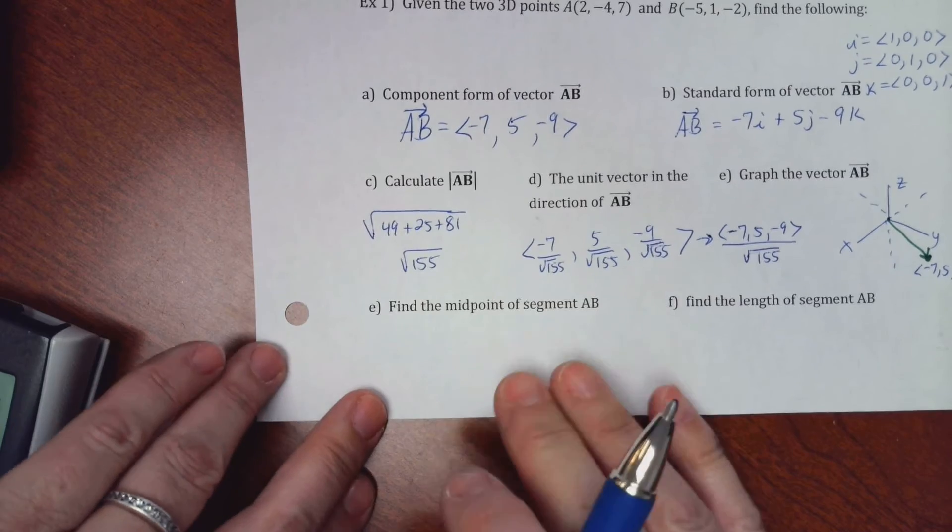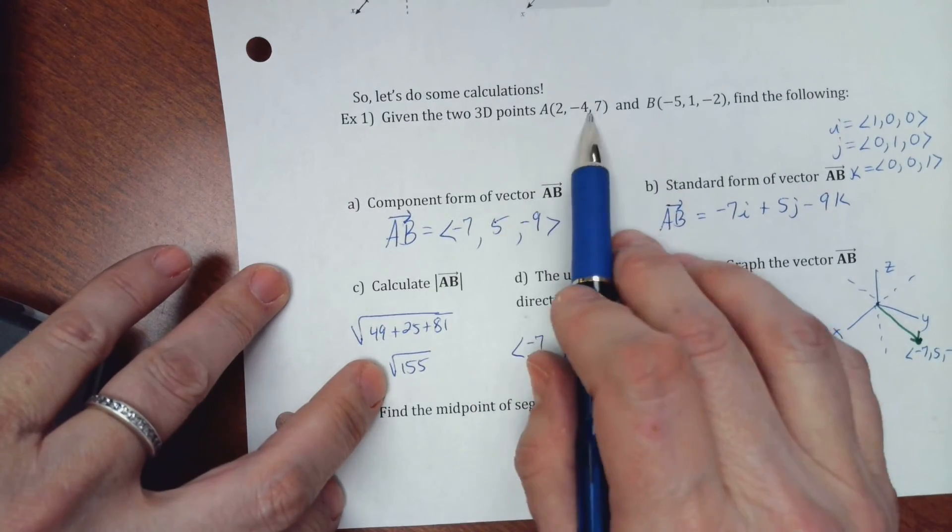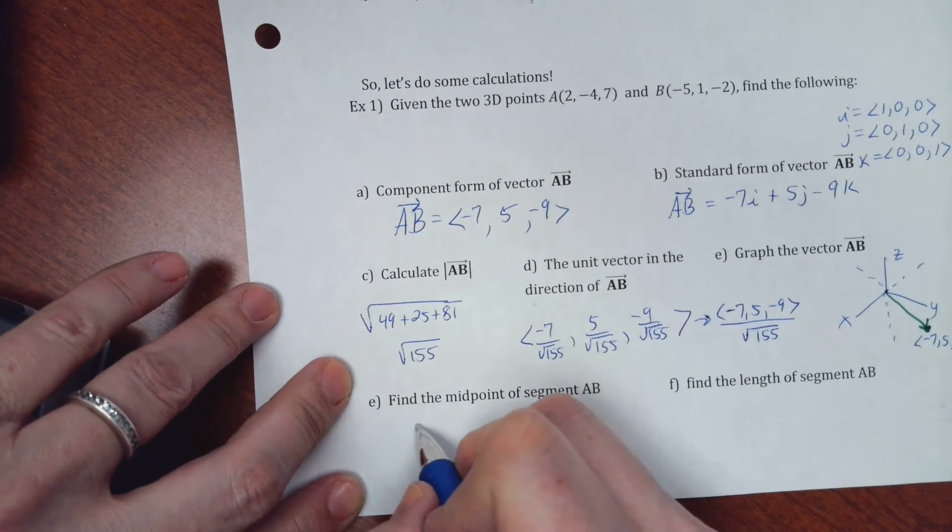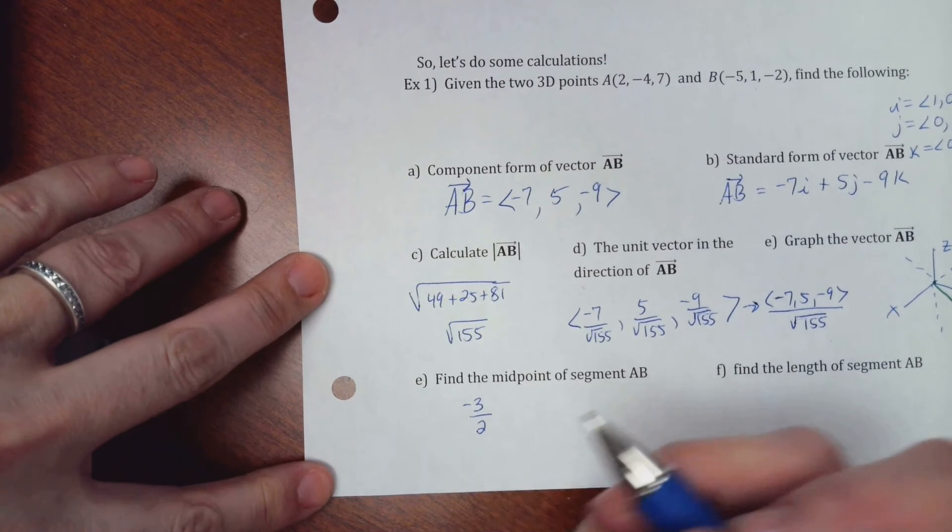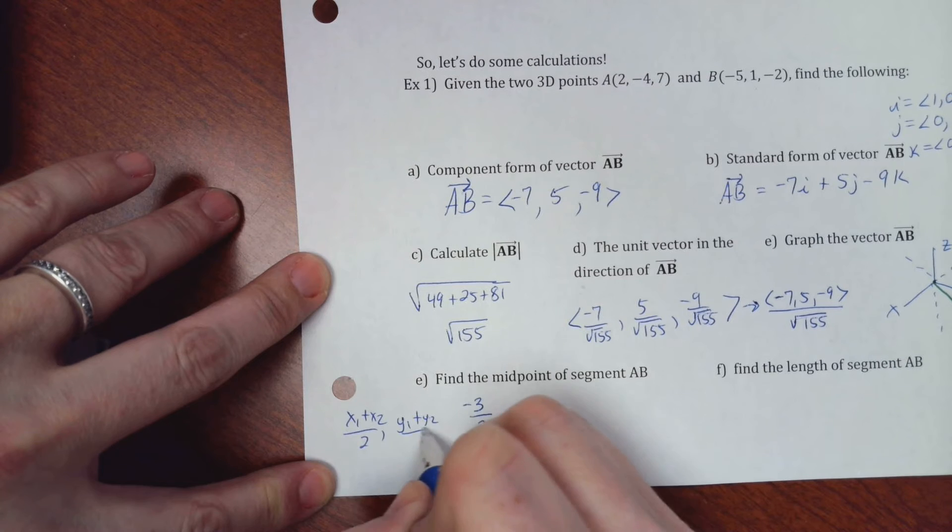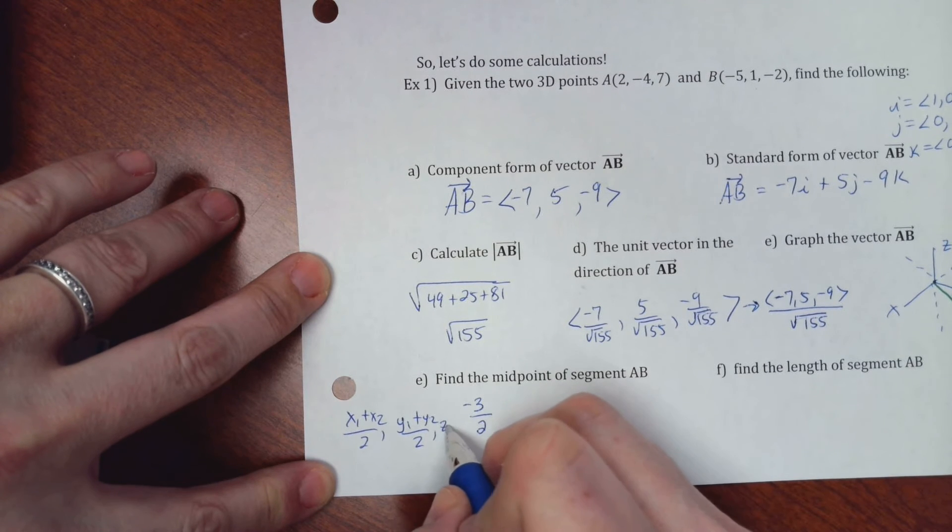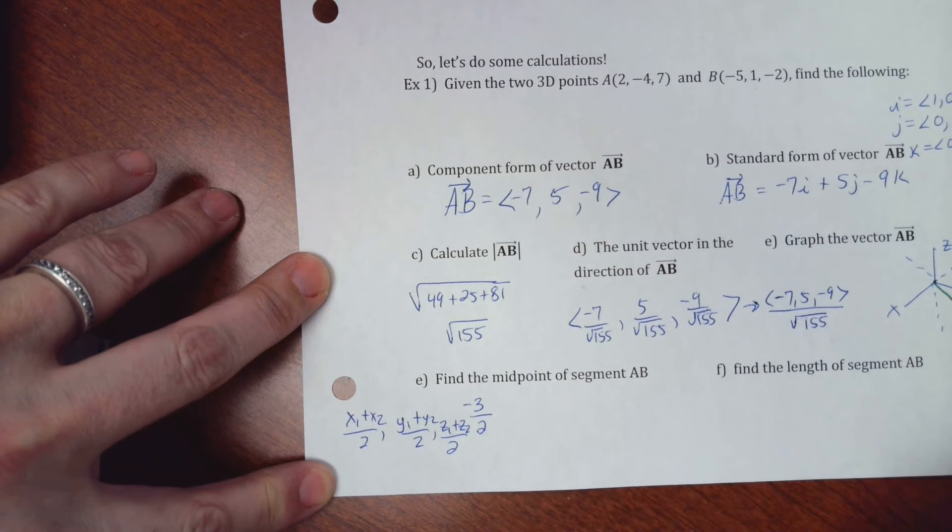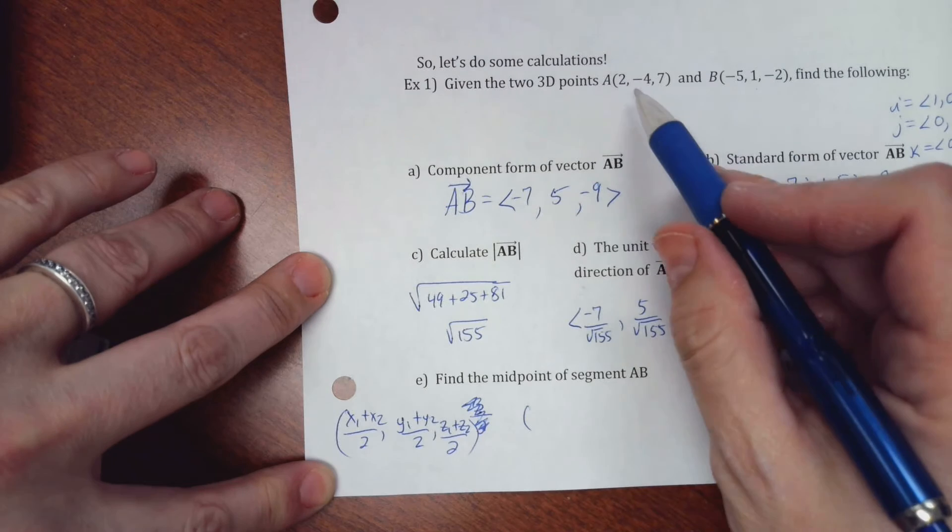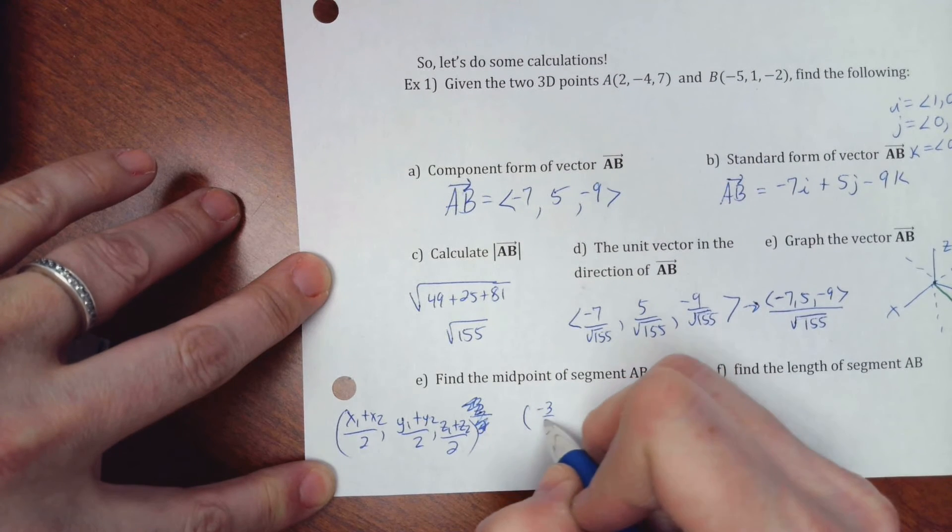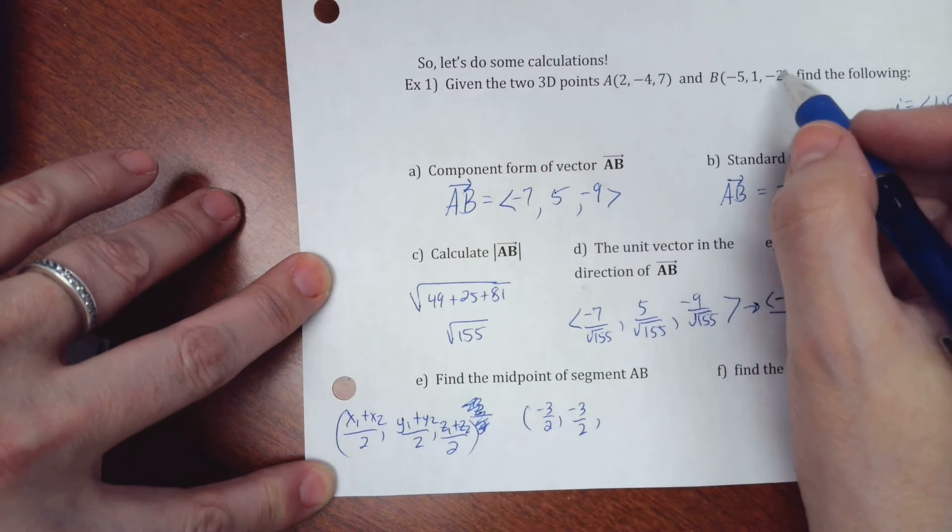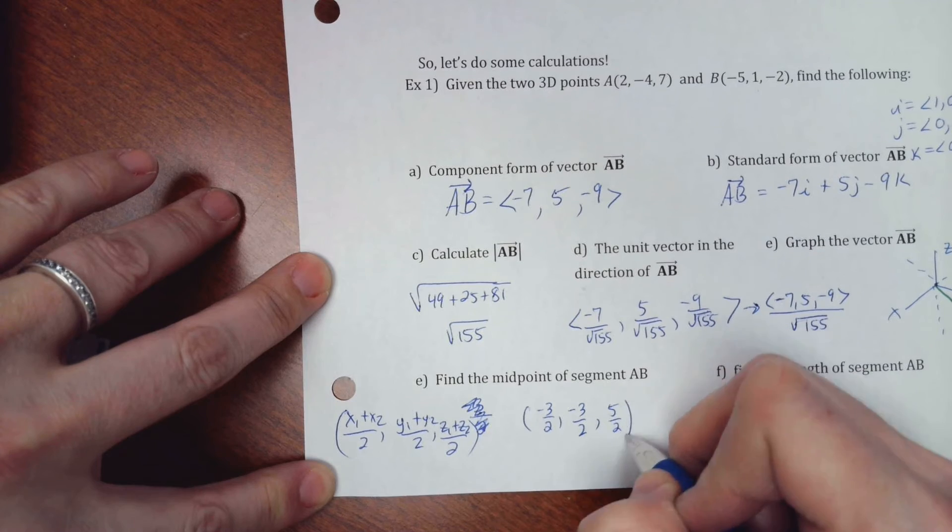Alright. So find the midpoint of the segment AB. So from A to B, remember your midpoint formula, you add things up and divide by 2. So 2 plus negative 5 is negative 3 over 2. Remember your midpoint formula from geometry. You do X1 plus X2 over 2, and then you do Y1 plus Y2 over 2. Well, now you have a third part, Z1 plus Z2 over 2. That's my midpoint formula. So my midpoint of the segment would be 2 plus negative 5, so negative 3 over 2. Then negative 4 plus 1, so negative 3 over 2. And 7 plus 2, so 5 over 2. It would be a midpoint, though.